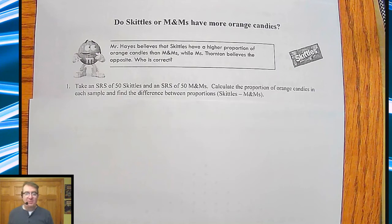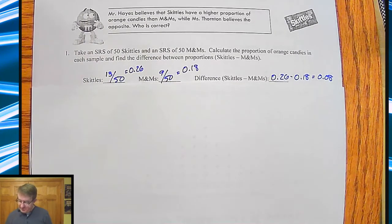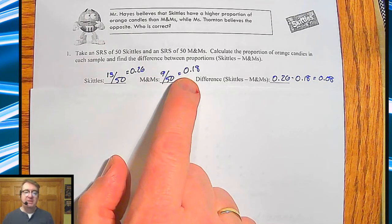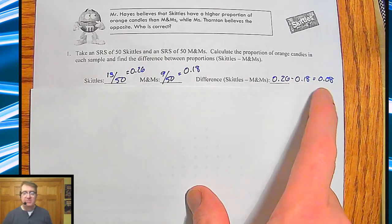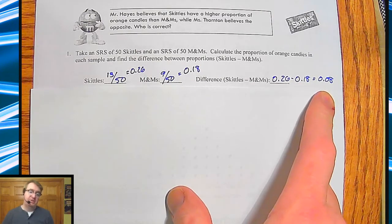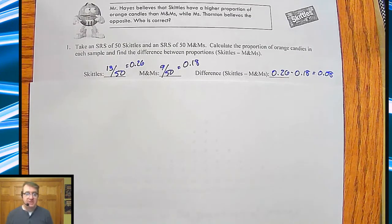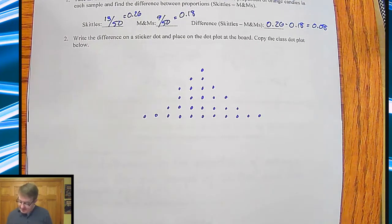You're going to take a simple random sample of 50 Skittles and 50 M&Ms, calculate the proportion of orange candies in each sample, and find the difference between proportions. If you were in my class right now, you'd be eating Skittles and M&Ms. Everybody would go through and do this, put their dot plots up on the board, and this is the data that they saw.